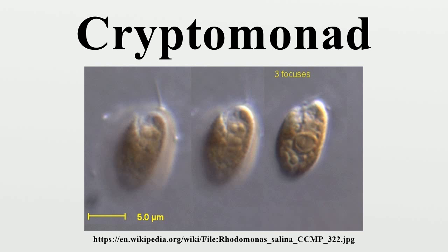In some classifications, the cryptomonads were considered close relatives of the dinoflagellates because of their similar pigmentation, being grouped as the Pyrrophyta. There is considerable evidence that cryptomonad chloroplasts are closely related to those of the heterokont algae and haptophytes, and the three groups are sometimes united as the Chromista.